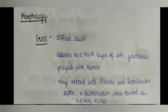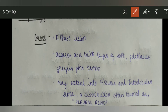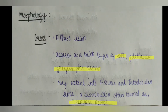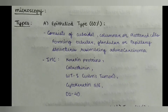Next, we will discuss the morphology. Grossly, it is a diffuse lesion. It appears as a thick layer of soft gelatinous grayish-pink tumor. It may extend into the fissures and interlobular septa — a distribution often termed the 'pleural rind.'